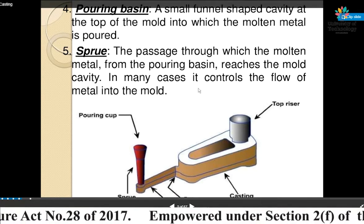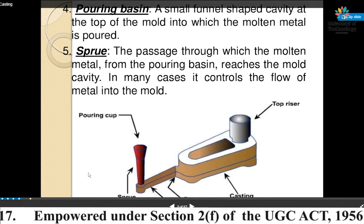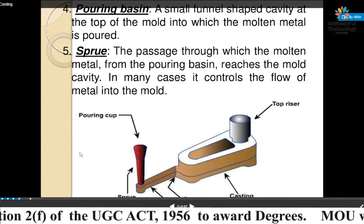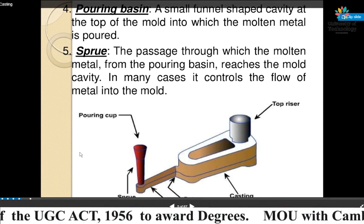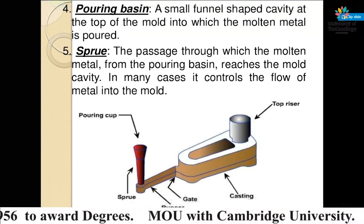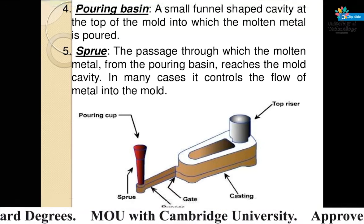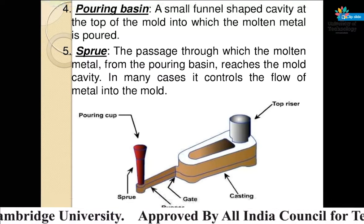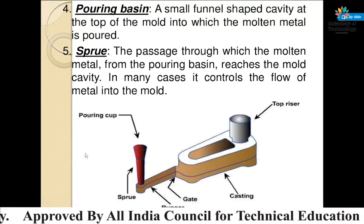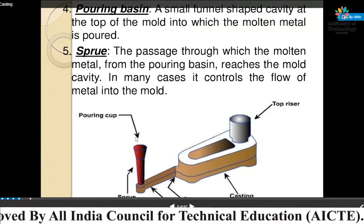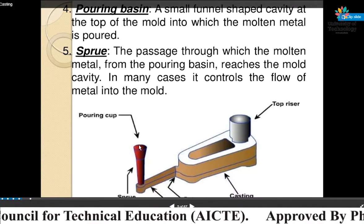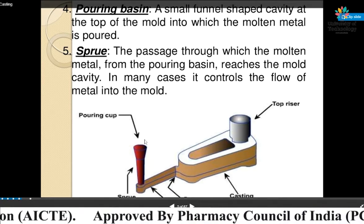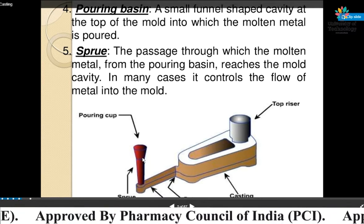Pouring basin — a small funnel-shaped cavity at the top of the mold into which the molten metal is poured. We can see this labeled as the pouring basin in the figure.